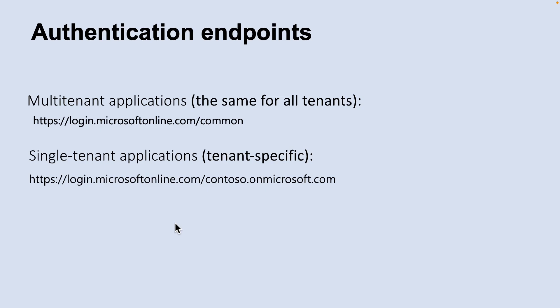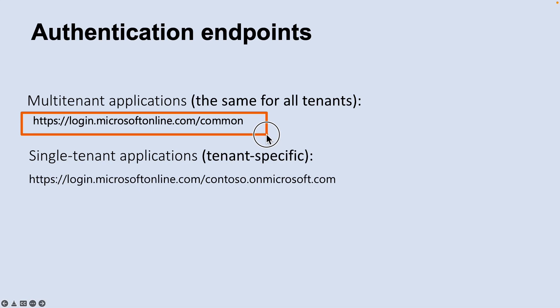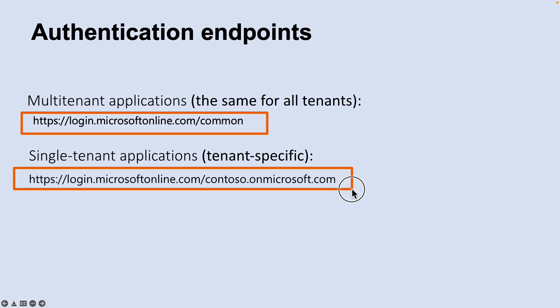Some additional considerations exist when developing a multi-tenant application instead of a single-tenant application. If you are making an application available to users in multiple directories, you need a mechanism to determine which tenant they are in. To accomplish this, Azure AD provides a common authentication endpoint where any multi-tenant application can direct sign-in requests. This endpoint is https://login.microsoftonline.com/common for all directories in Azure AD, while a tenant-specific endpoint might be https://login.microsoftonline.com/contoso.onmicrosoft.com.